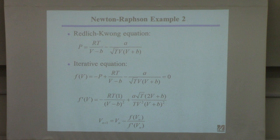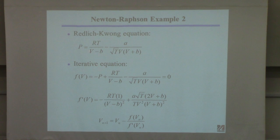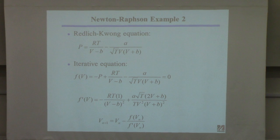Now let's apply this to the Redlich-Kwong equation, which we tried with the fixed point method not entirely successfully. Given temperature, pressure, the gas constant R, and gas-dependent constants A and B, we solve for molar volume V. First, bring P to the right-hand side to get f(V) = 0 — you always need f(x) = 0, not f(x) = P. Then you must find the derivative of that function, which is the cost of Newton-Raphson.